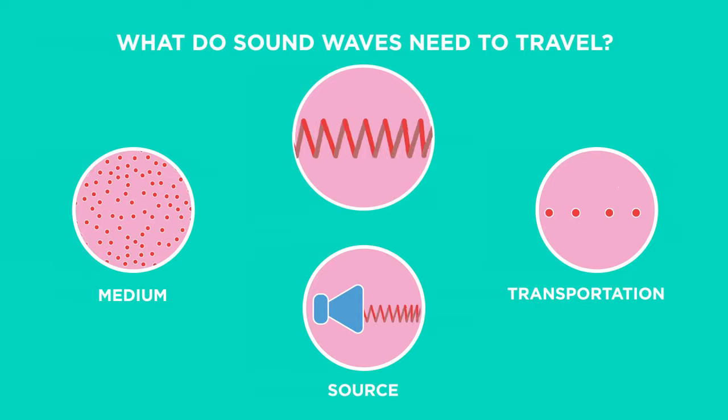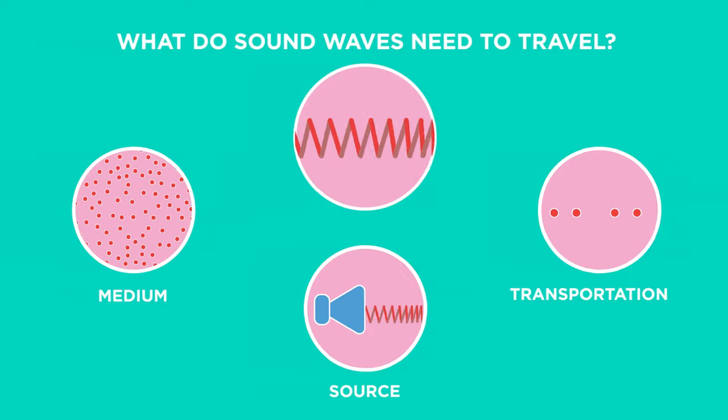What do sound waves need to travel? Sound needs a medium to travel through because it needs particles to disturb. Which is why the vacuum of space is silent. There are no particles for sound waves to disturb.